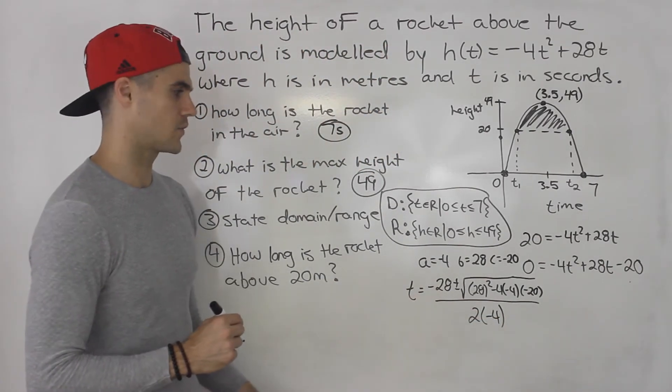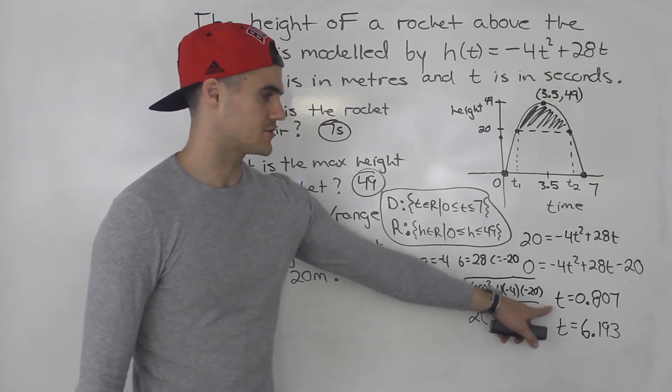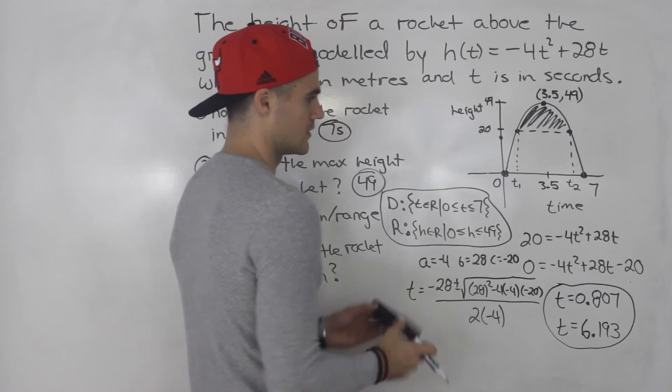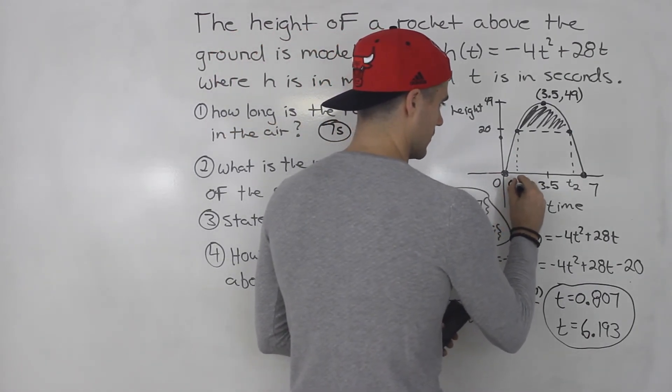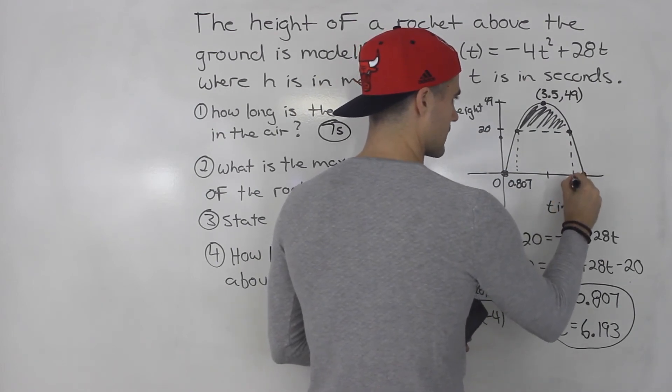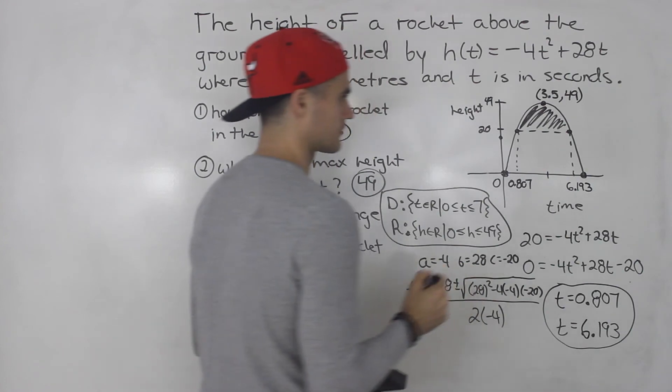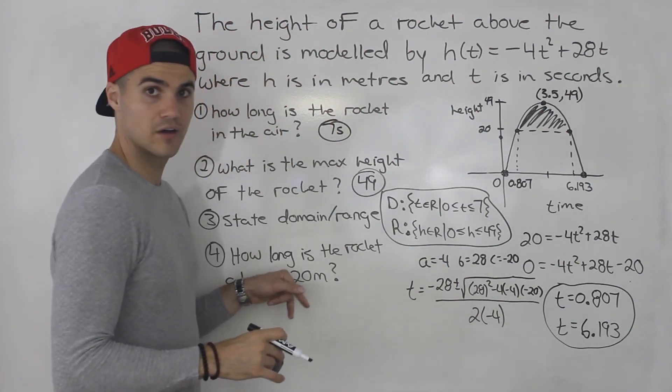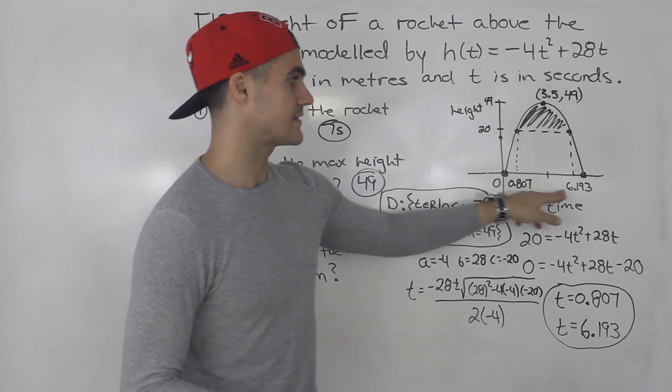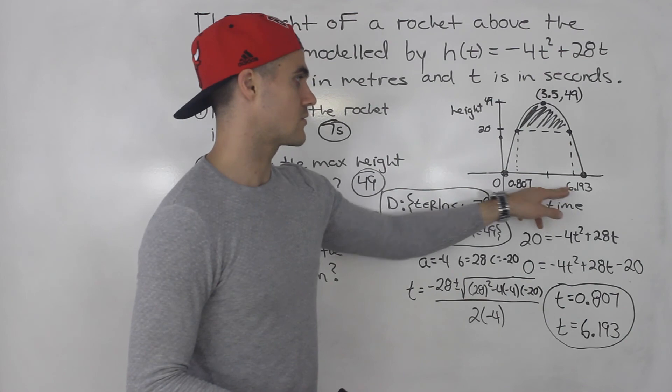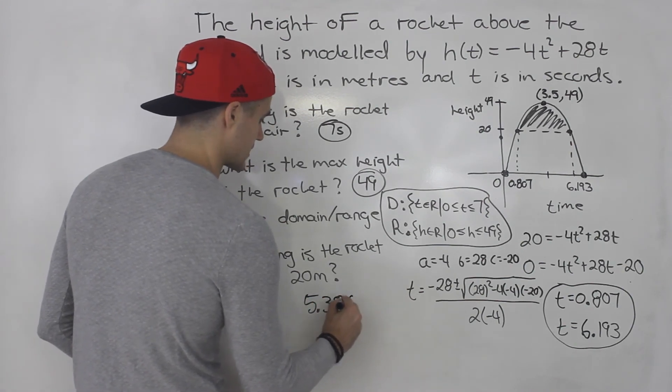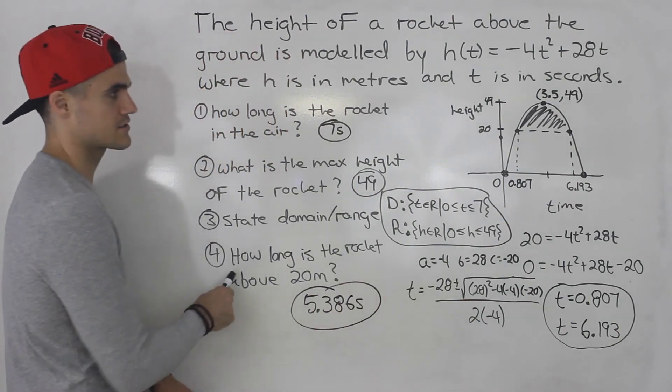So you're going to get two solutions here when you plug all that in. And the two solutions you get in the quadratic formula are t = 0.807 and t = 6.193. So 0.807 will be here, and then 6.193 would be right there. And so how long is the rocket above 20 meters? They're asking how long it's above 20 meters, not at which points it hits 20 meters. They're asking how long is it above 20 meters, so you got to take the difference between these. So 6.193 - 0.807, that would give you 5.386. So 5.386 seconds is the answer to number 4.